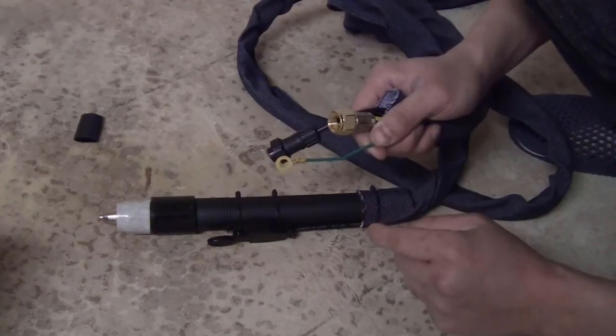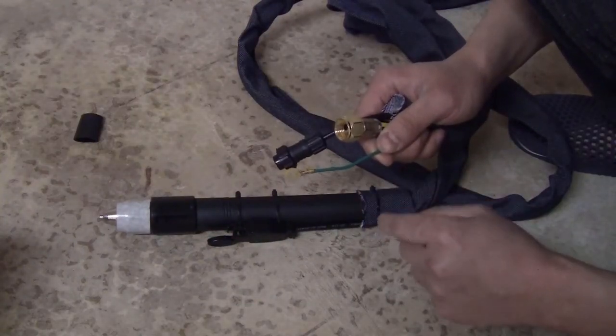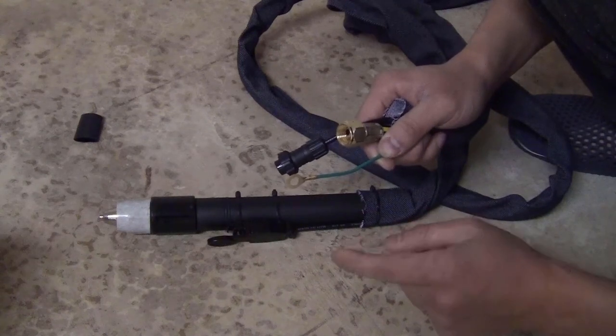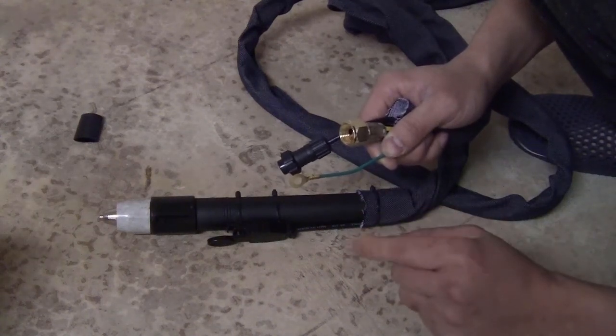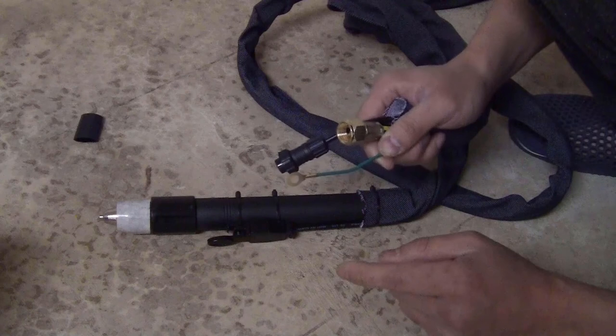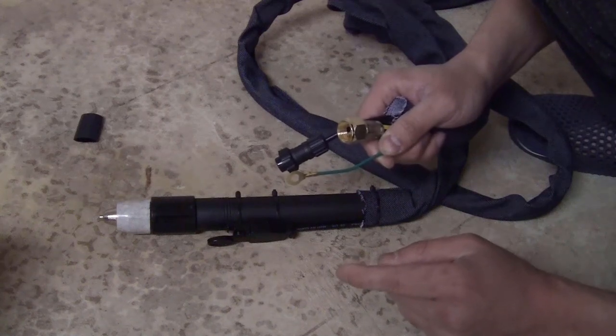One thing to notice is you should buy a plasma cutter that has the pilot arc. That way you can start the arc without touching the steel, and that will make it a lot easier for the CNC plasma cutter to work.